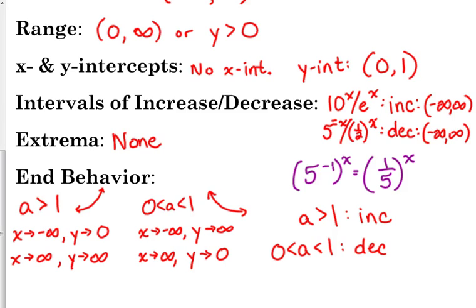Negative infinity is the left side of the function, positive infinity is the right side of the function, and our y values are coming up to zero.